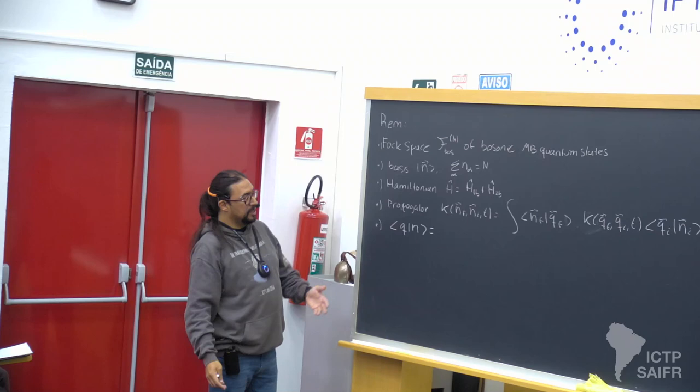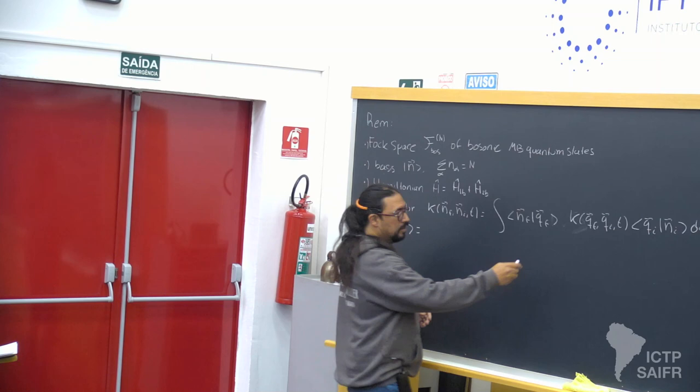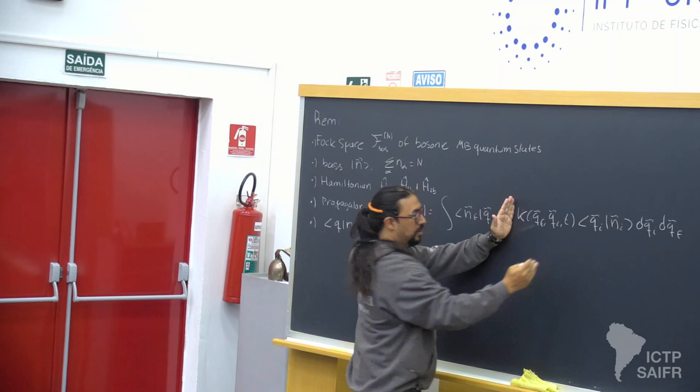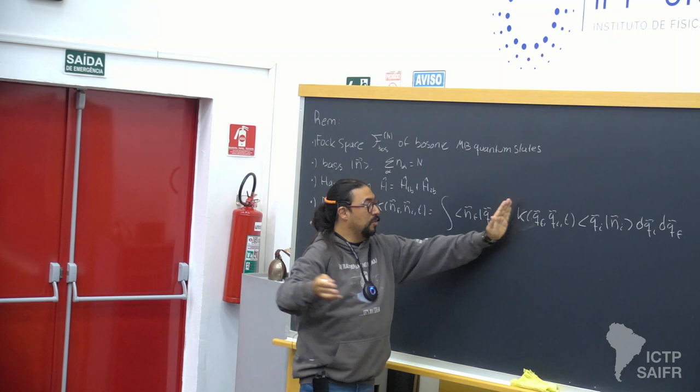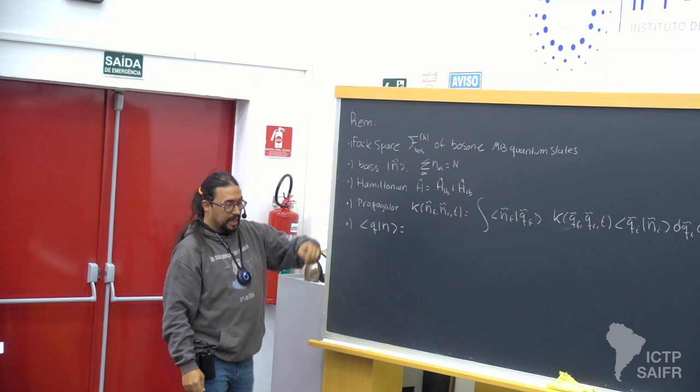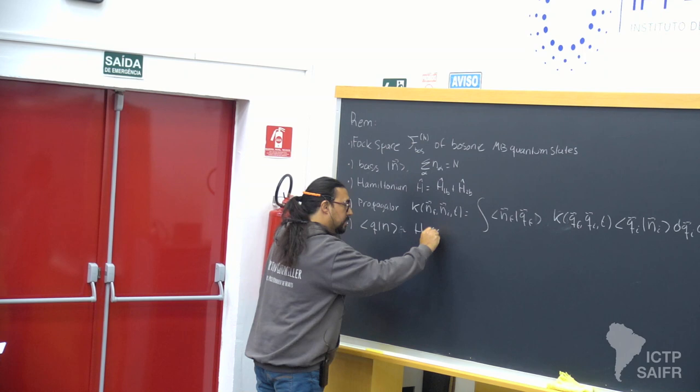We found an expression for the propagator between physical Fock states by going through a propagator in the space of quadratures — these Q variables, which are not physical states. So this propagator in quadrature space doesn't admit a physical interpretation, but the expression is mathematically exact, and these overlaps are related to Hermite polynomials.